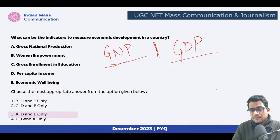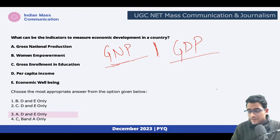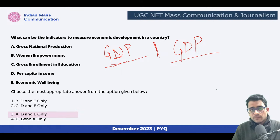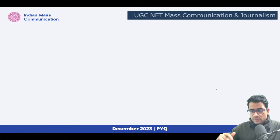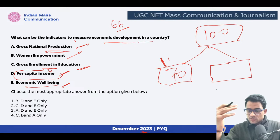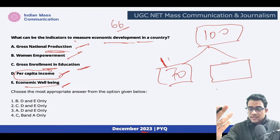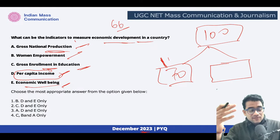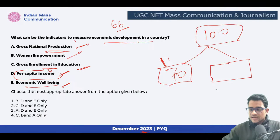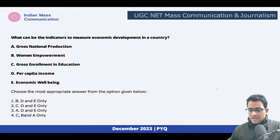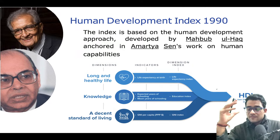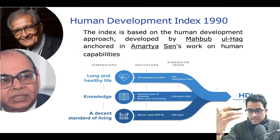Now tell me: what is the difference between GNP and GDP? These are basic 11th class economics concepts. One is national, the other is domestic — the name itself suggests it. GDP is the value of goods and services produced within the boundary of a nation. GNP also includes output from people who are not physically present in the country — for example, the Indian diaspora abroad. You are students of journalism and mass communication; you should know this from reading newspapers.